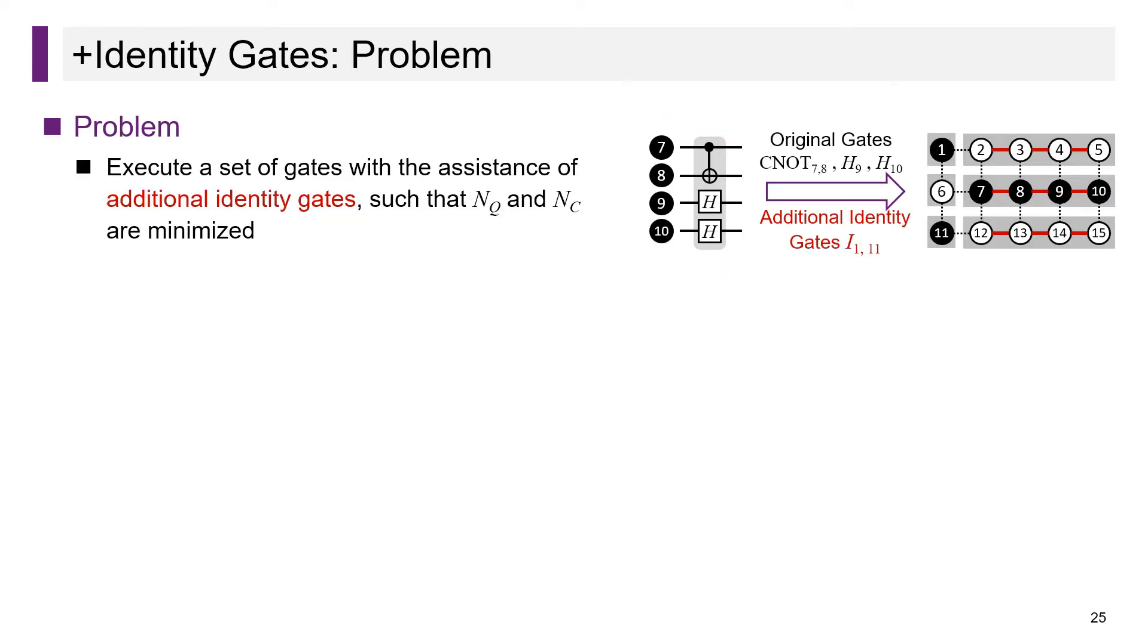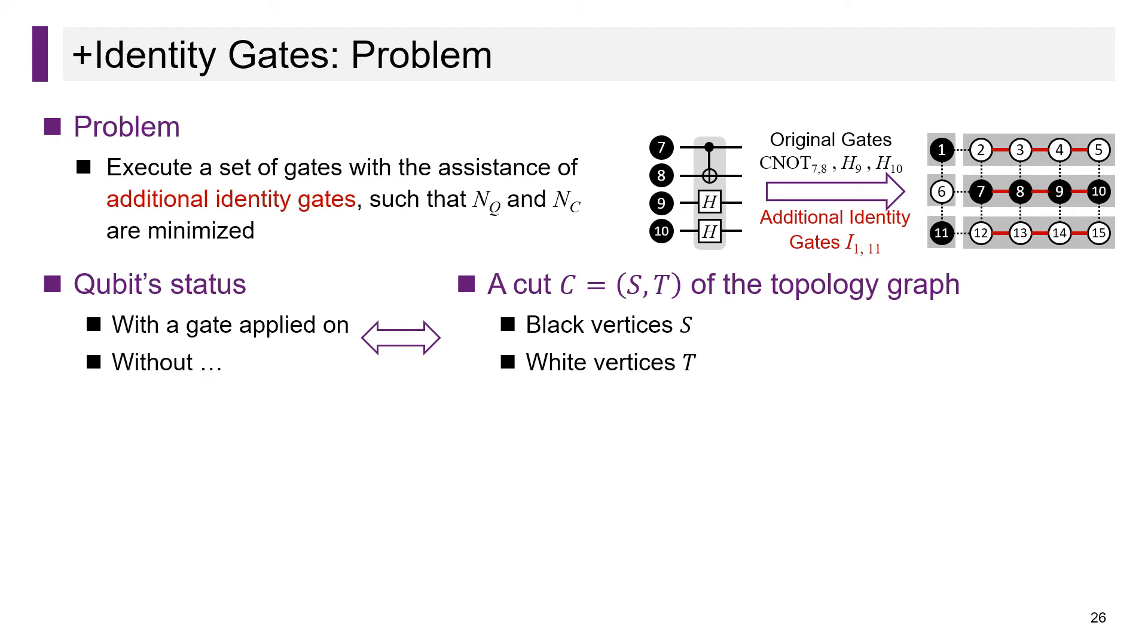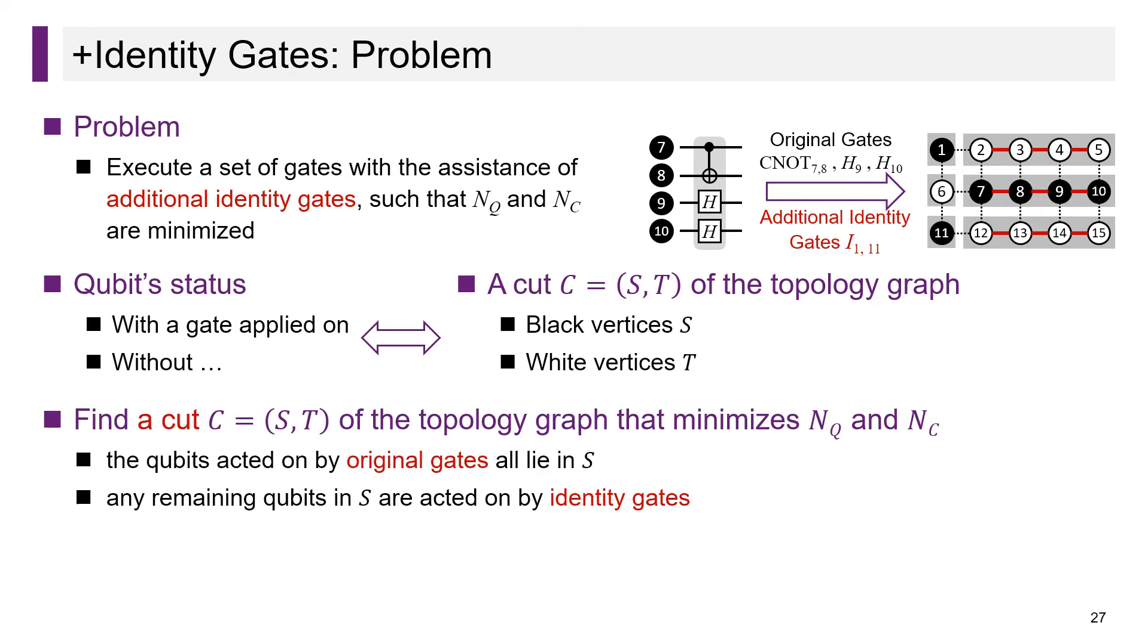Let's move to the second challenge. Execute a set of gates with the assistance of additional identity gates, such that N_q and N_c are minimized. The key to formalizing and then solving this problem is the connection between qubit status and a cut of the device topology. The status of a qubit is either with a gate applied on or not. The qubits with a gate acting on form a set S, and the others form a set T. S and T constitute a cut of the topology graph. With this connection, we can solve the problem by finding such a cut of the topology graph that the qubits acted on by original gates all lie in the side S, and any remaining qubits in the side S are acted on by identity gates, and this cut also minimizes N_q and N_c.